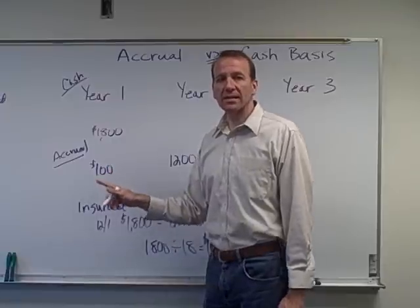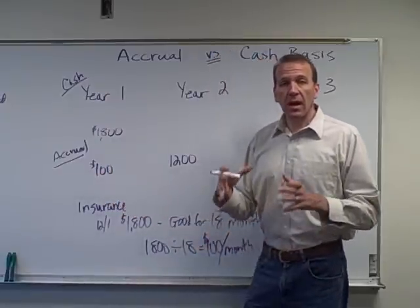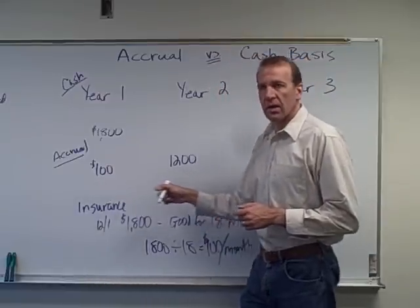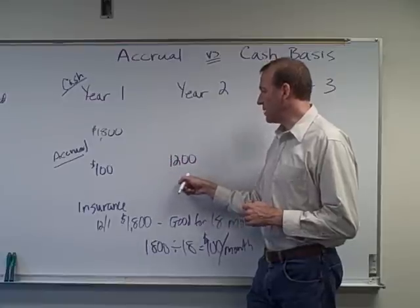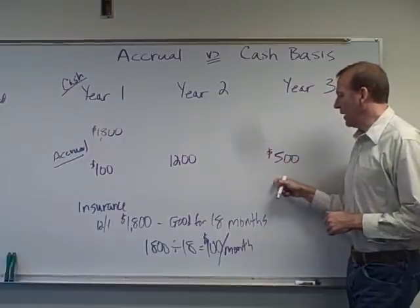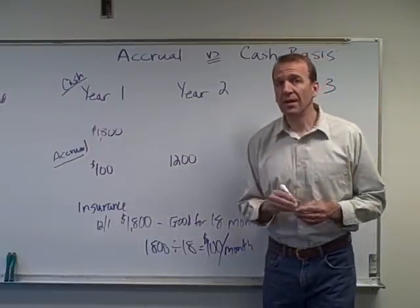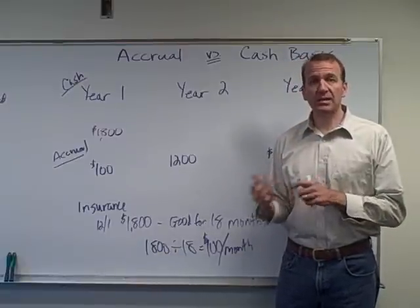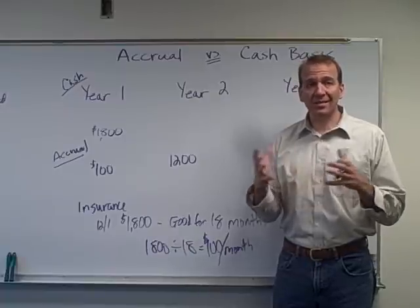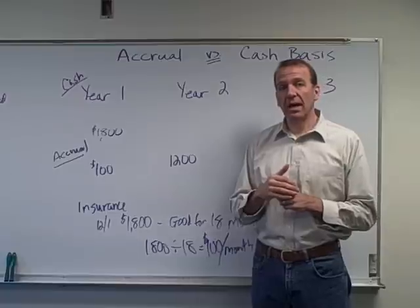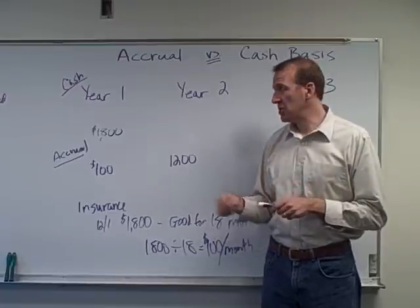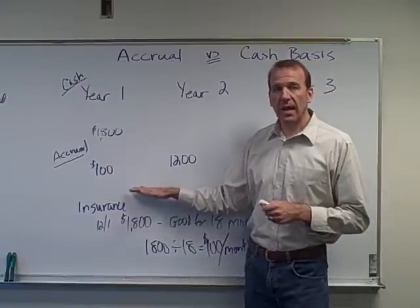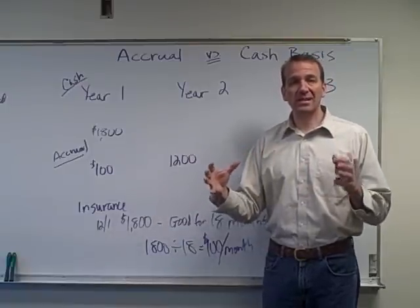You can see a big difference: under the cash basis we recognize $1,800 of expense in year one when we pay. Under the accrual basis, we recognize $100 in year one, $1,200 as the policy continues for the next 12 months, and $500 in year three. Revenue is handled in a similar manner — we recognize revenue as we've earned it, not when we receive the cash, matching revenues and expenses in the right time periods.